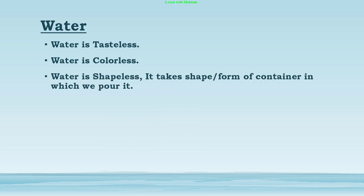Water is shapeless — it takes the shape or form of the container in which we pour it. Whenever you pour water into a glass, it will take the shape of that glass. So in actual, water is shapeless. So what is water? Water is a tasteless, colorless, and shapeless liquid.